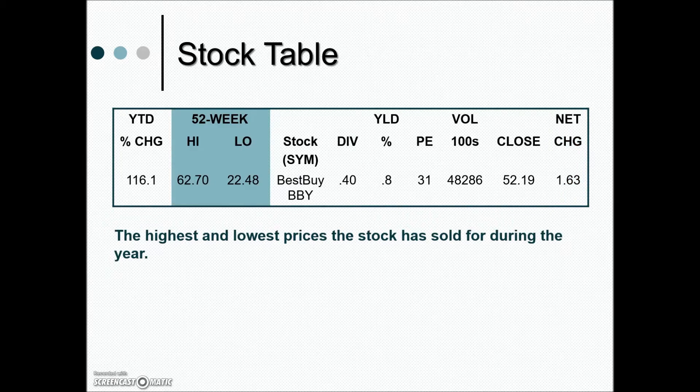This highlighted area shows the overall highest and lowest price the stock sold for during the year. We're seeing a high of $62.70 per share and a low of $22.48 per share. The closing price was $52, so it's off by about $10 from the highest it's been so far this year.